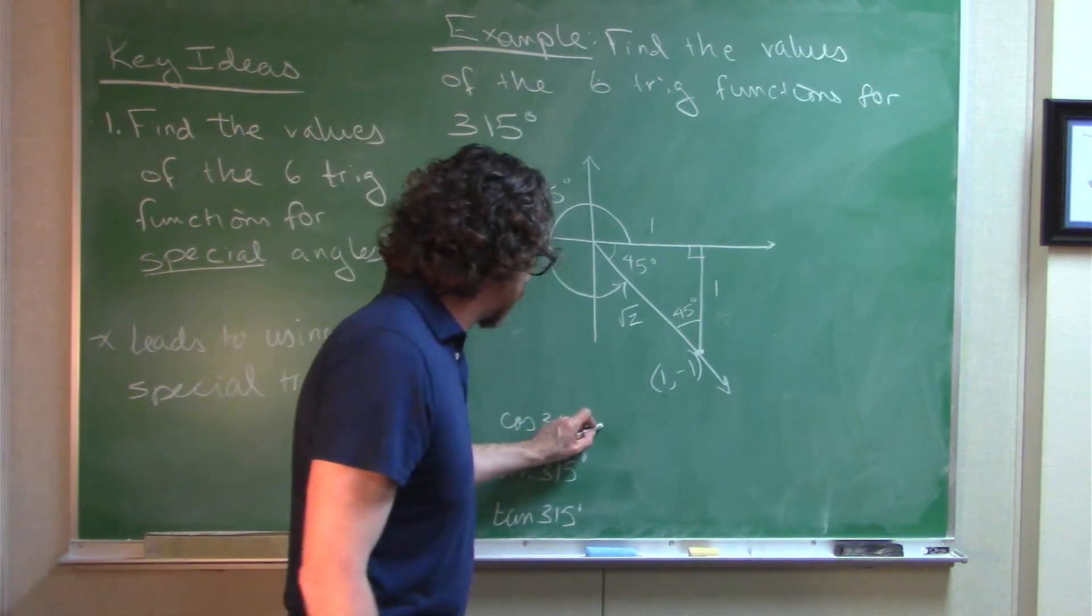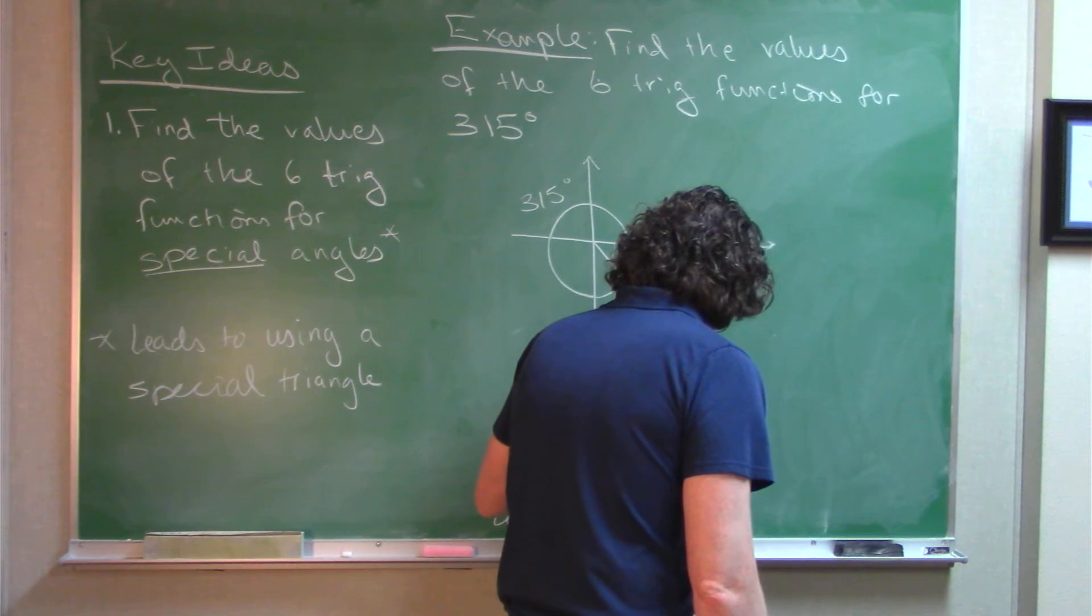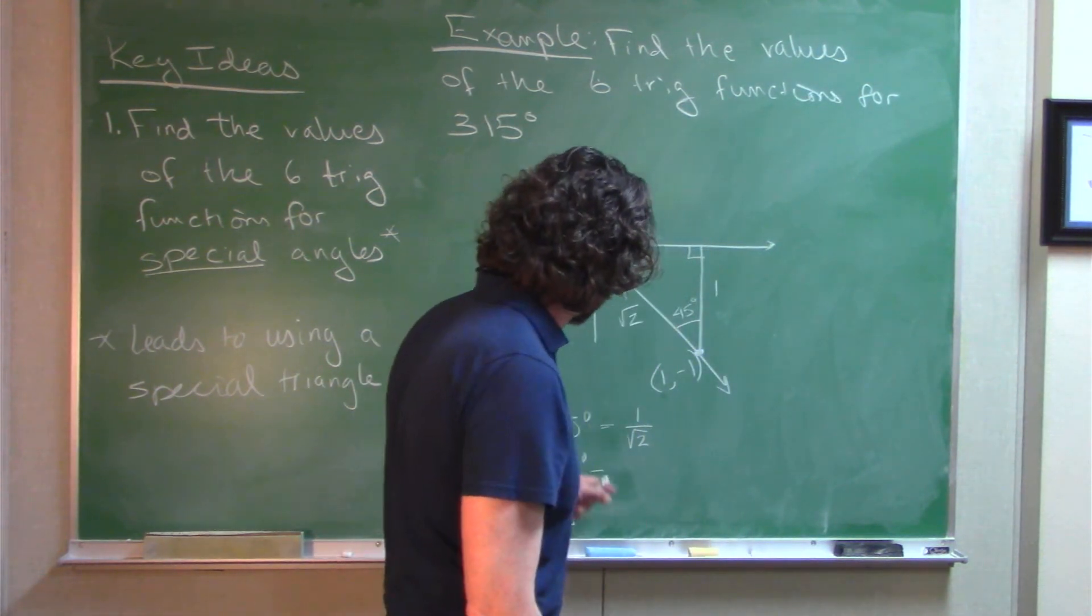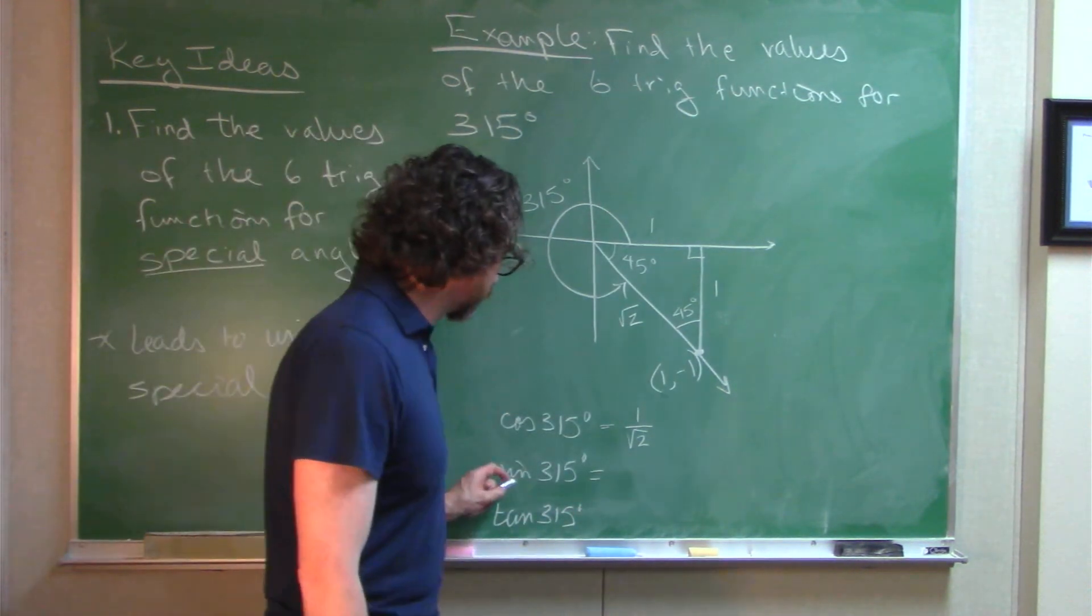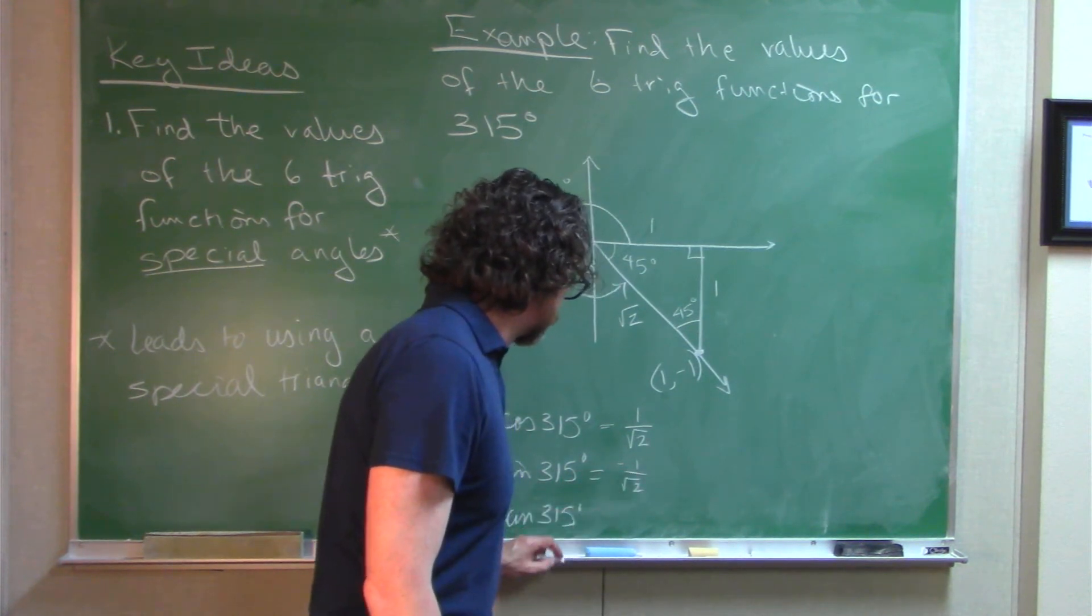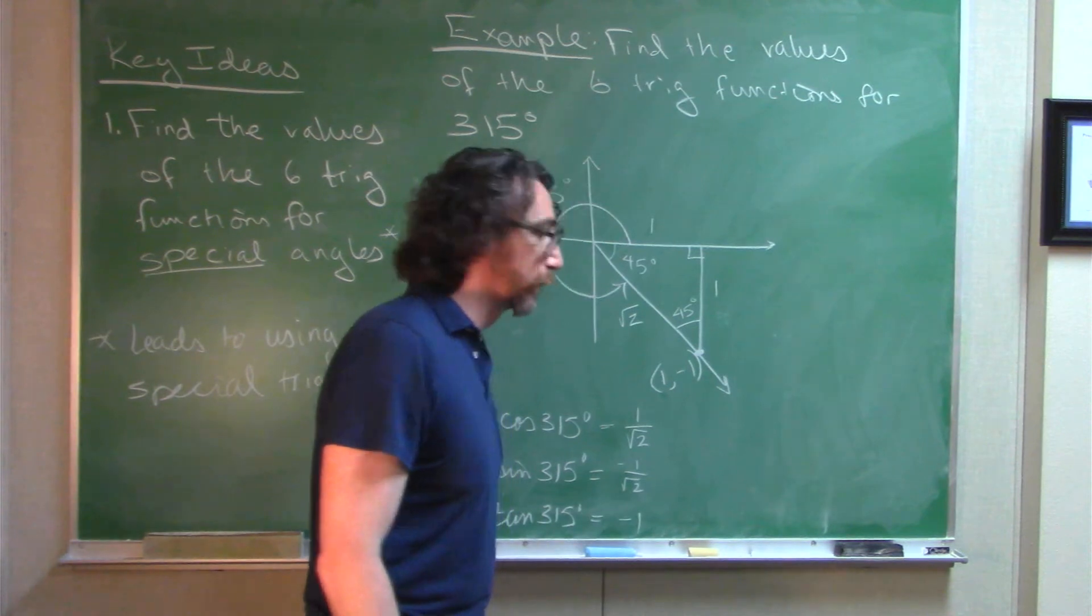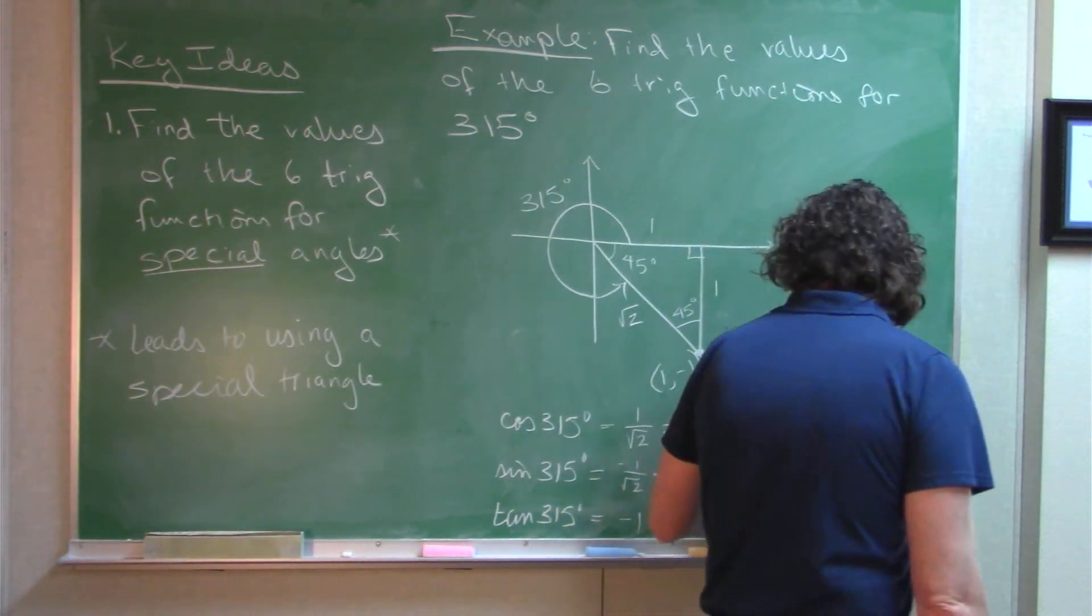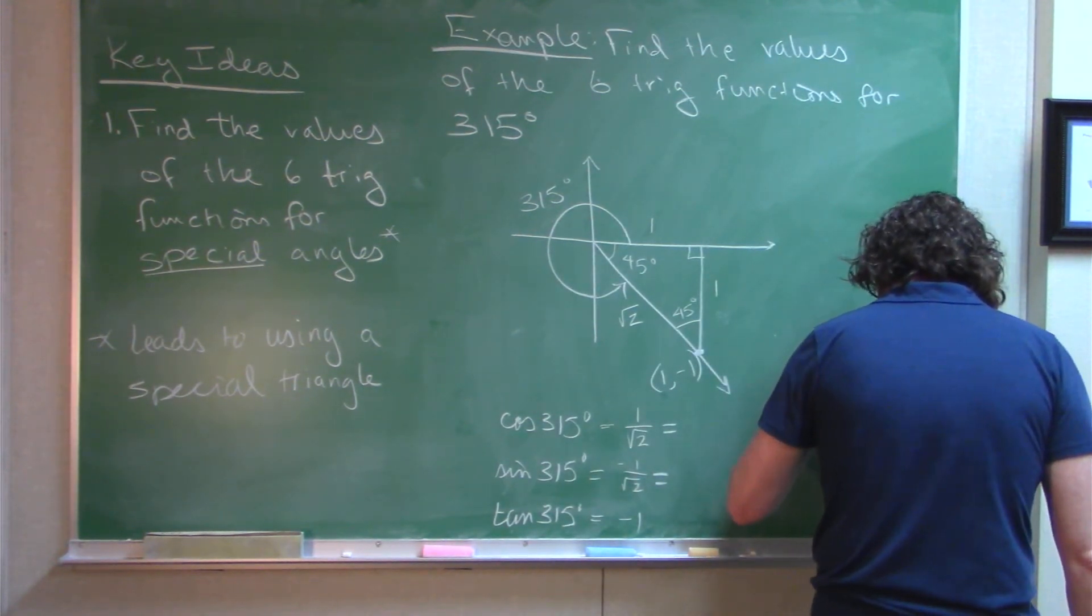Cosine, x over r: 1 over radical 2. Sine, y over r: negative 1 over radical 2. Tangent, y over x: negative 1 over 1. Let's do the other ones here.